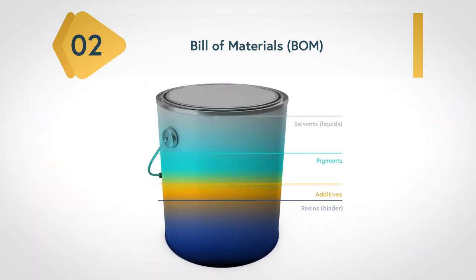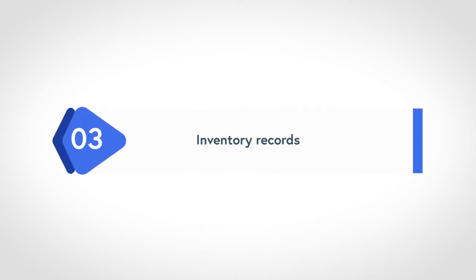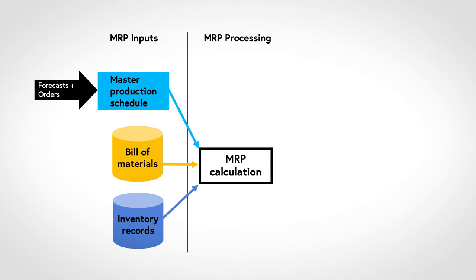Hence, for paint, the bill of materials is given by the amount of raw materials in liters or grams that go into the specific paint product. Third, we need information about inventory records, which includes how many parts we hold on inventory, supplier lead times, and scheduled receipts. With these three inputs, MRP starts with the master production schedule and works backwards from the due date using lead times and other information to determine when and how much to order of materials and components.